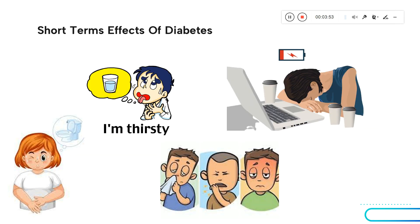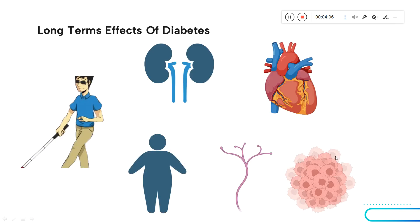Short-term effects of diabetes include feeling more thirsty, frequent urge to urinate, repetitive infections, and feeling lethargic or fatigued. Long-term effects include kidney issues, heart issues, neurological issues, obesity, eyesight problems, and in further stages it might even lead to cancer.